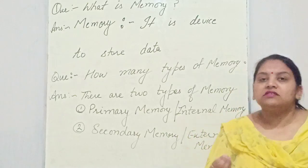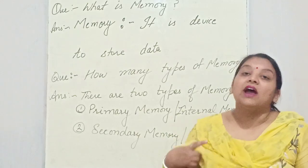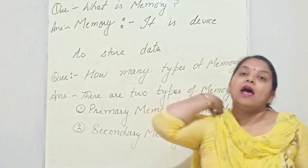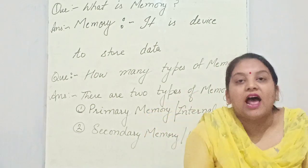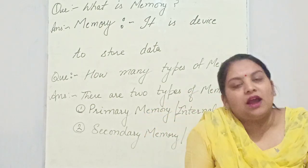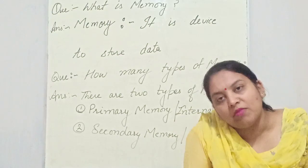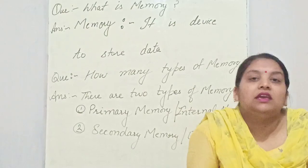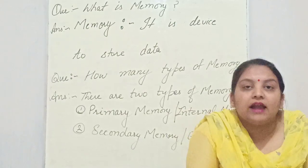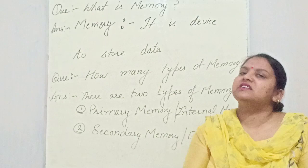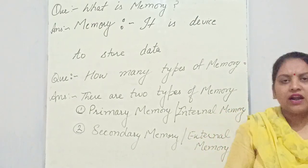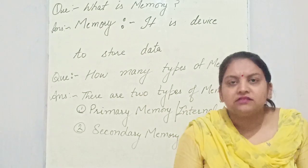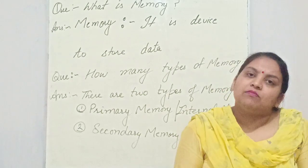Just skimming through the chapter — primary memory is of two types: RAM and ROM. RAM is random access memory and ROM is read only memory, and they are located near the processor. Secondary memory includes pen drive, which is actually a flash drive, or hard disk. These are examples of secondary memory.